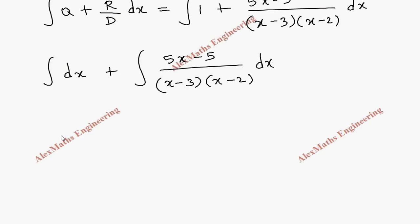Now let's take this as I₁, this is I₂. I₁ is nothing but after integration we get x + constant c₁. Then I₂, I have to apply the partial fraction rule, so let's take the expression alone: (5x - 5) by (x - 3)(x - 2).